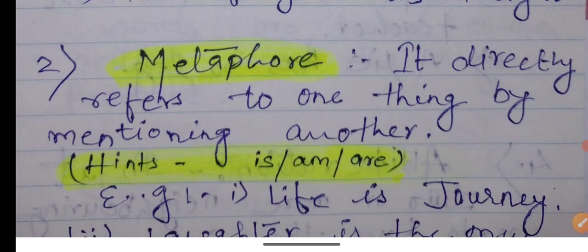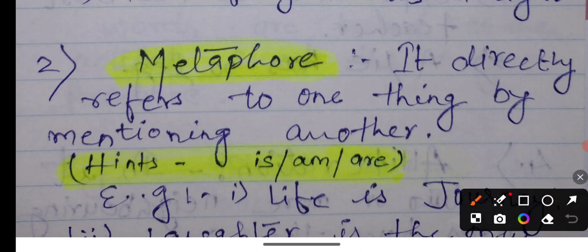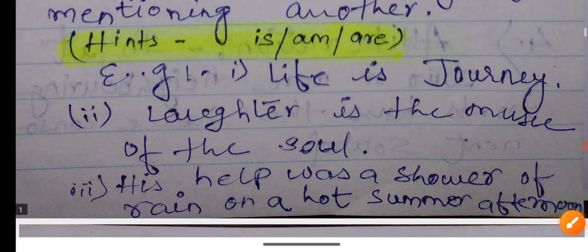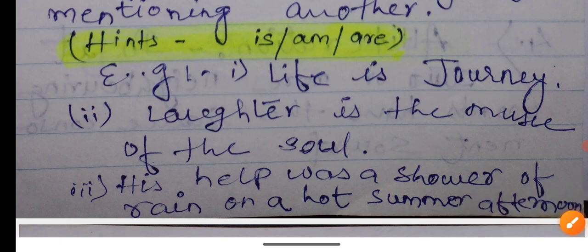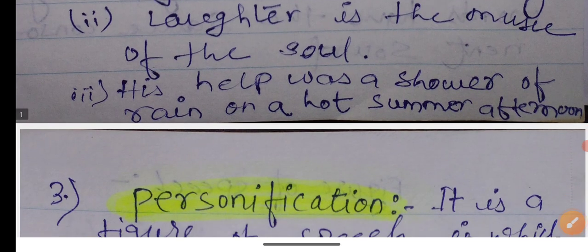Next is metaphor. What is metaphor? It directly refers to one thing by mentioning another. In this, we directly refer to any person or thing and compare it. For example, life is a journey. How can life be a journey? But we say life is also a journey, a yatra that we must complete. Laughter is the music of the soul. Laughter is medicine. This is what we call a metaphor, directly comparing one thing to another.